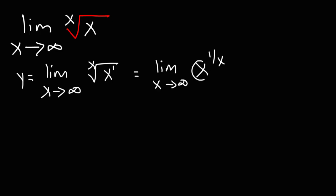Whenever you have a variable raised to another variable, in order to bring this exponent down, you need to use logarithms. We're going to use the natural log. So, let's take the natural log of both sides. So, we're going to have the natural log of y is equal to the limit as x goes to infinity of the natural log of x raised to the 1 over x.